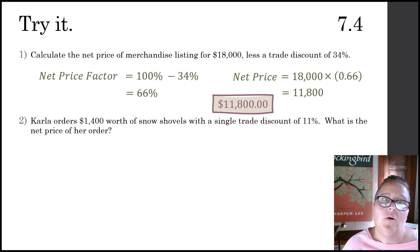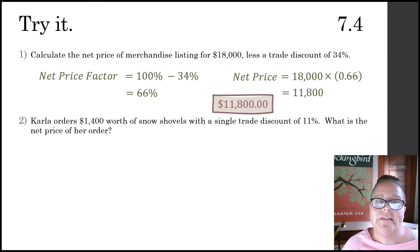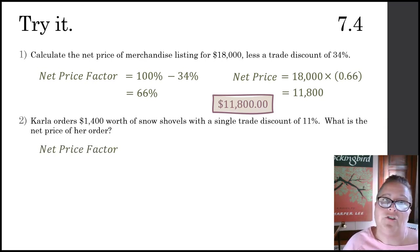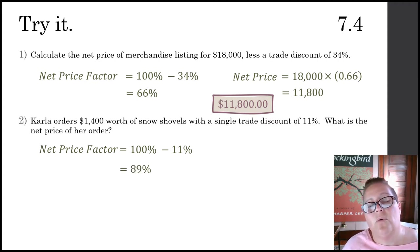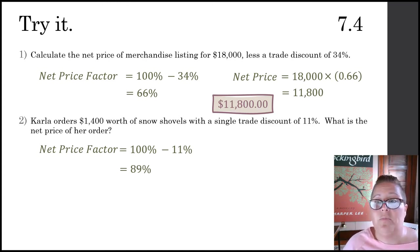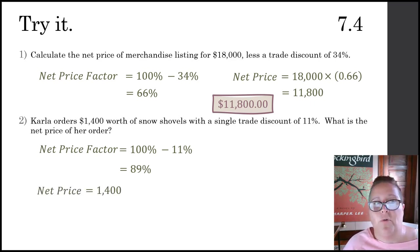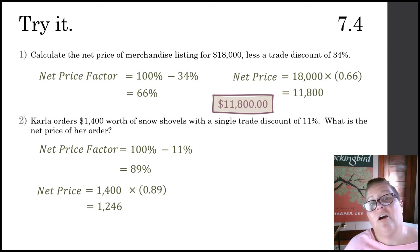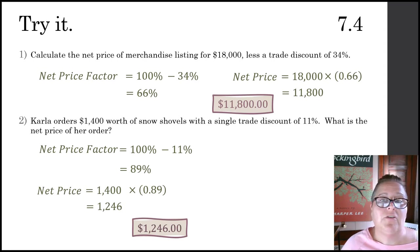Second problem: Carla ordered $1,400 worth of snow shovels with a single trade discount of 11%. What is the net price on her order? The net price factor would be 100% minus the 11% discount, or 89% — which is 0.89 as a decimal. That means my net price will be the list price of $1,400 times 0.89, which is $1,246. So Carla's net price on her order is $1,246.